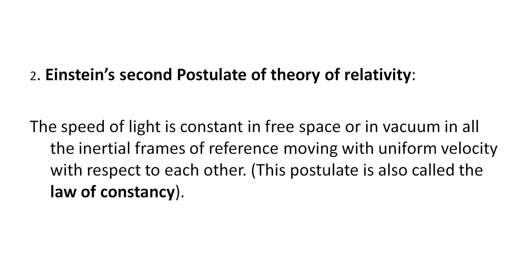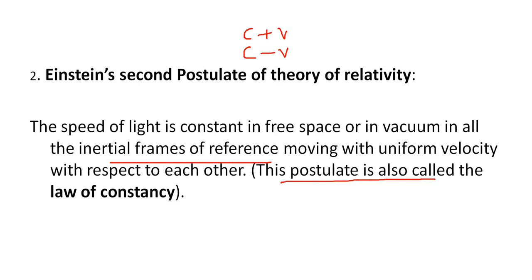The second postulate is Einstein's second postulate of theory of relativity: the speed of light is constant in free space or in vacuum in all inertial frames of reference moving with uniform velocity with respect to each other. That is, you cannot add anything to the speed of light, nor can you subtract anything from it. This postulate is also known as the law of consistency, because the speed of light is constant.